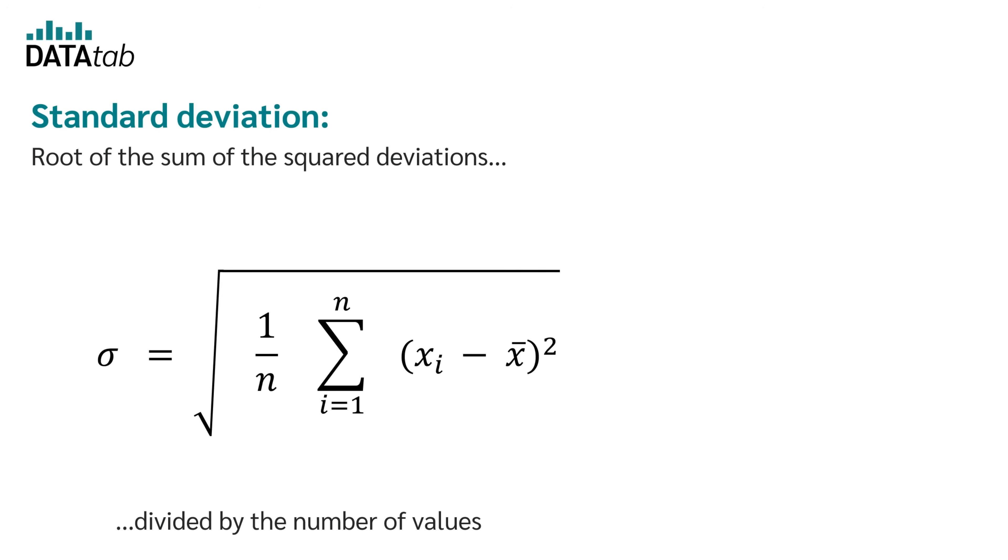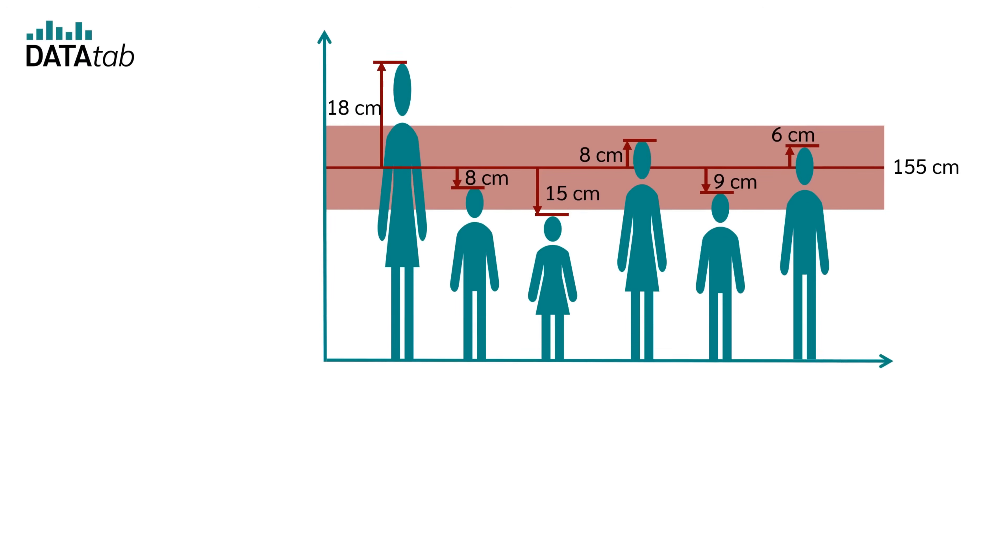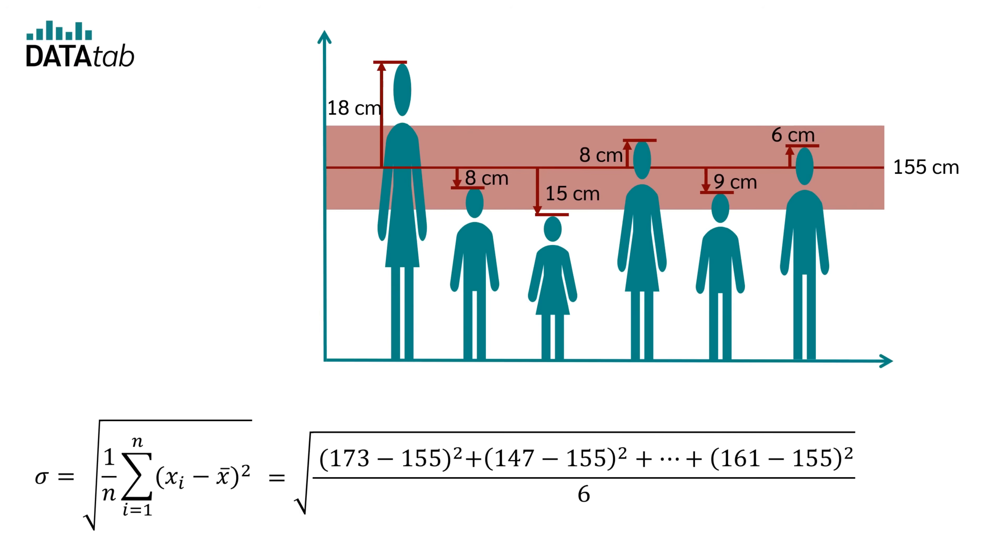So the standard deviation is the root of the sum of squared deviations divided by the number of values. For our example, this means that we calculate the size of the first person minus the mean and square that, then the size of the second person minus the mean and then square that, and so on until we arrive at the last person. Then we divide this number by the number of people, so 6, and take the root of it.